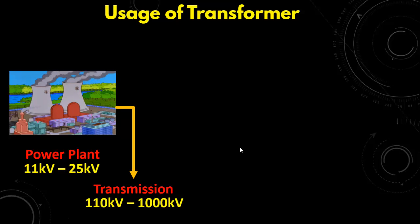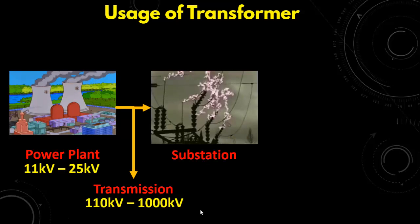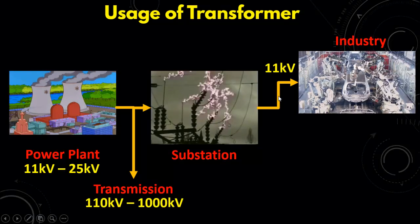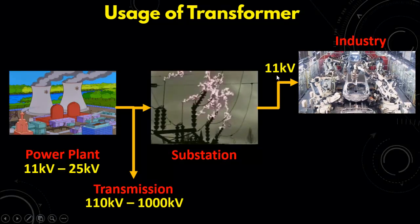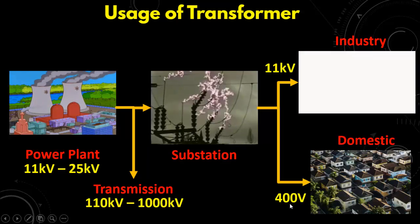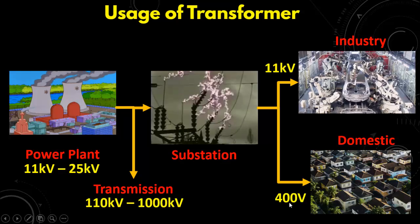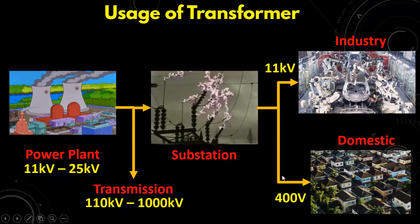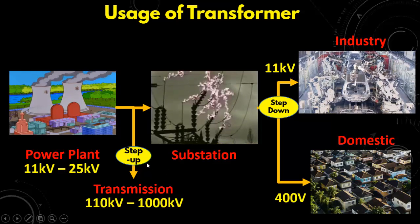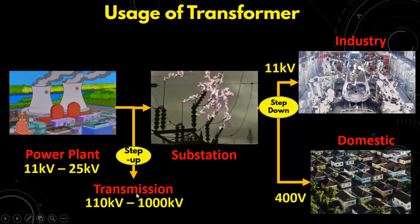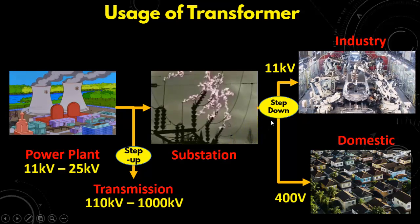So this is the transmission voltage. This transmission voltage is handled in the substation which is used to step down the voltage to 11 kV or another voltage for the industry and also to 400 volts or 220 volts for the domestic uses. So you can see here that the transformers are used as a step up transformer to step up the voltage in the transmission phase and then it acts as a step down transformer for the distribution phase.